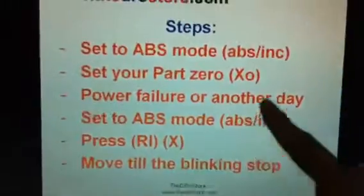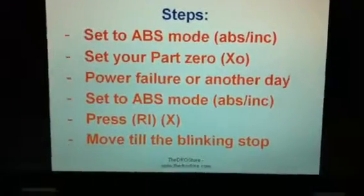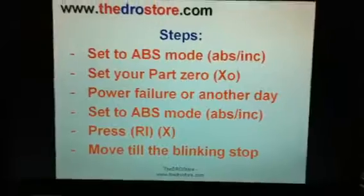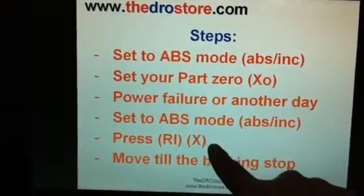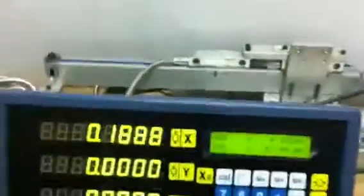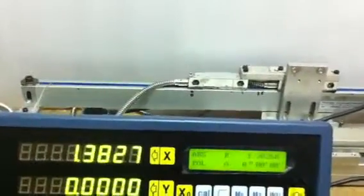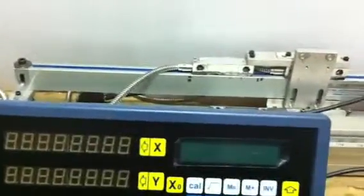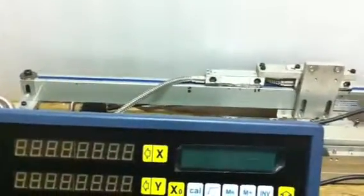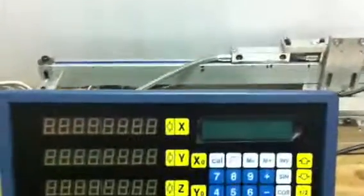Now we have completed the first two steps. In any case of power failure, or if we are going to work another day, we just need to find back the RI using this step. Now we are moving the axis — let's say there's a power failure while we are still moving the axis. So now we have lost our datum.